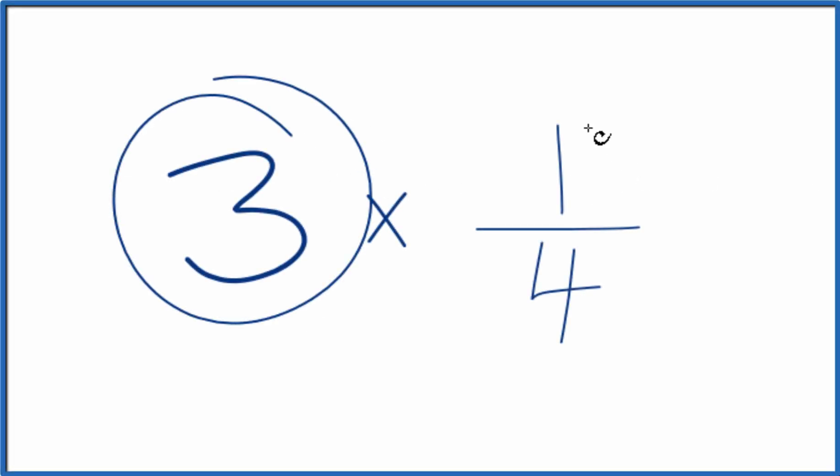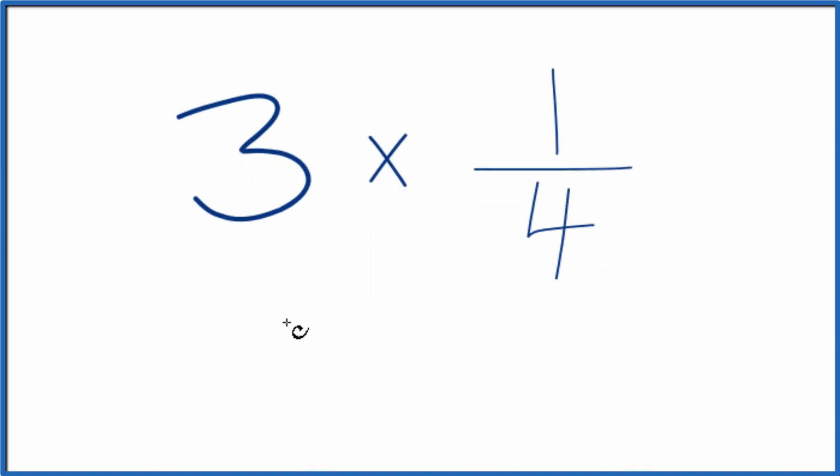Let's multiply 3 times 1 fourth. Here are two ways you can do that. The first is that we have three of these 1 fourths. So we could just add 1 fourth together three times like this.